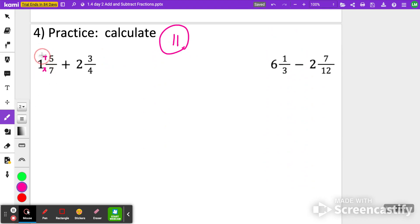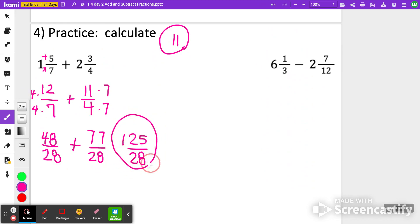Alright, 1 and 5 sevenths is going to be 12 sevenths. 2 and 3 fourths is going to be 11 fourths. Again, 7 and 4 have 28 in common. So I'm going to multiply my first fraction by 4, my second fraction by 7. 4 times 12 is 48 over 28. And 11 times 7 is 77 over 28. So I'm going to add these two together, and I should get 125 over 28.